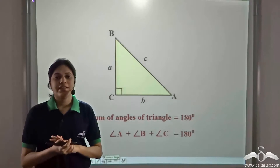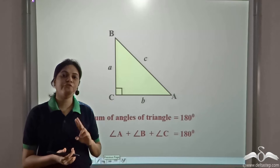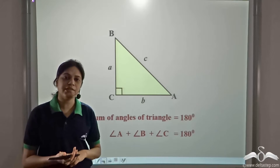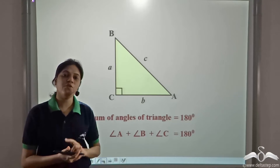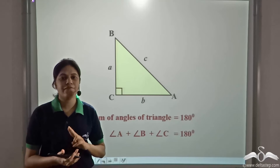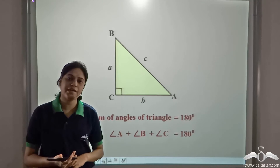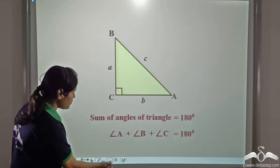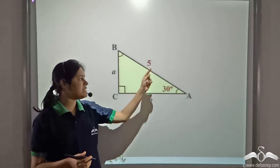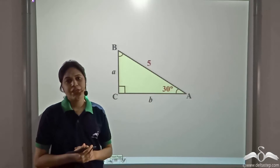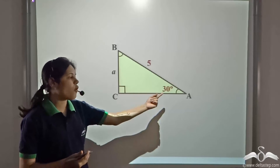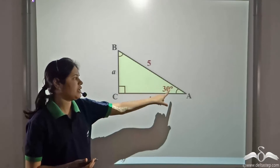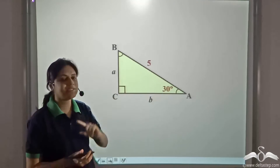So we have seen that if we know the measure of two sides, we can find the measure of the third side. Also, if we know the measure of two angles, we can find the measure of the third angle in a right angle triangle. Now, what if we know one side and one angle? Can you find the measure of all the angles and all the sides if you have one angle and one side?